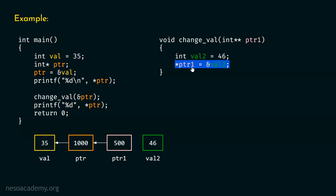If we simply write ptr1, we are trying to put the address of val2 inside ptr1. But after putting star in front of ptr1, we are trying to access ptr instead. So here we will put the address of val2 inside the ptr pointer. Now this pointer is pointing to variable val2. With the help of ptr1 we are accessing ptr, which is local to the main function. We just have to put star in front of ptr1 to access ptr — because ptr1 is pointing to ptr. That's the simple thing we must understand.